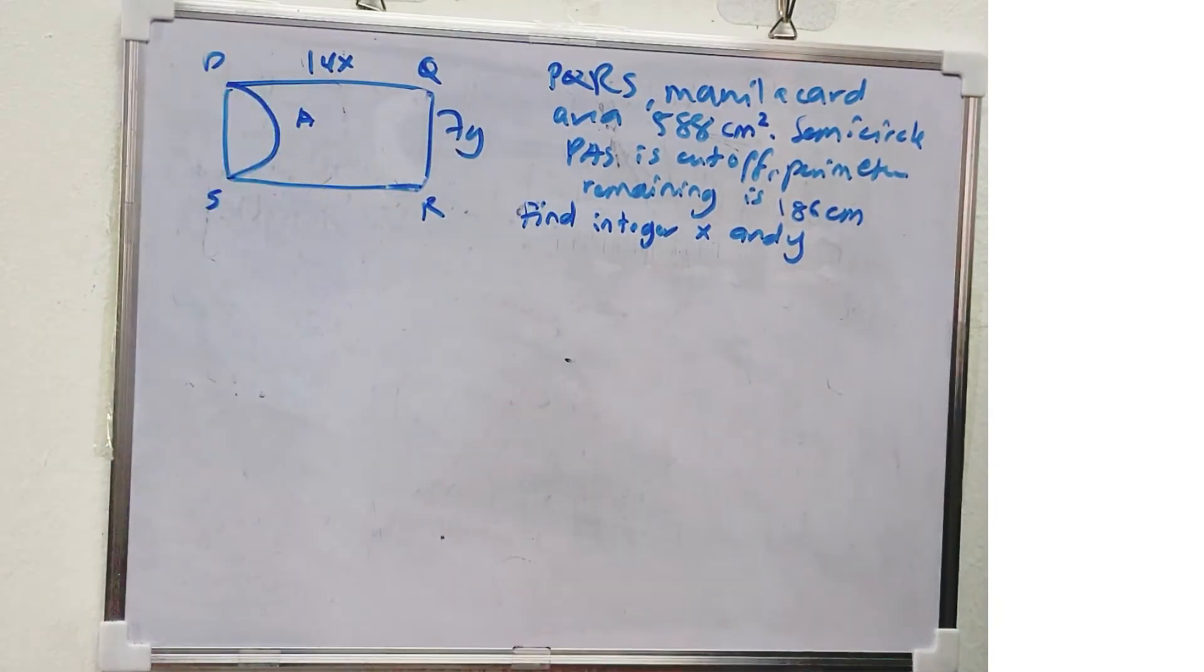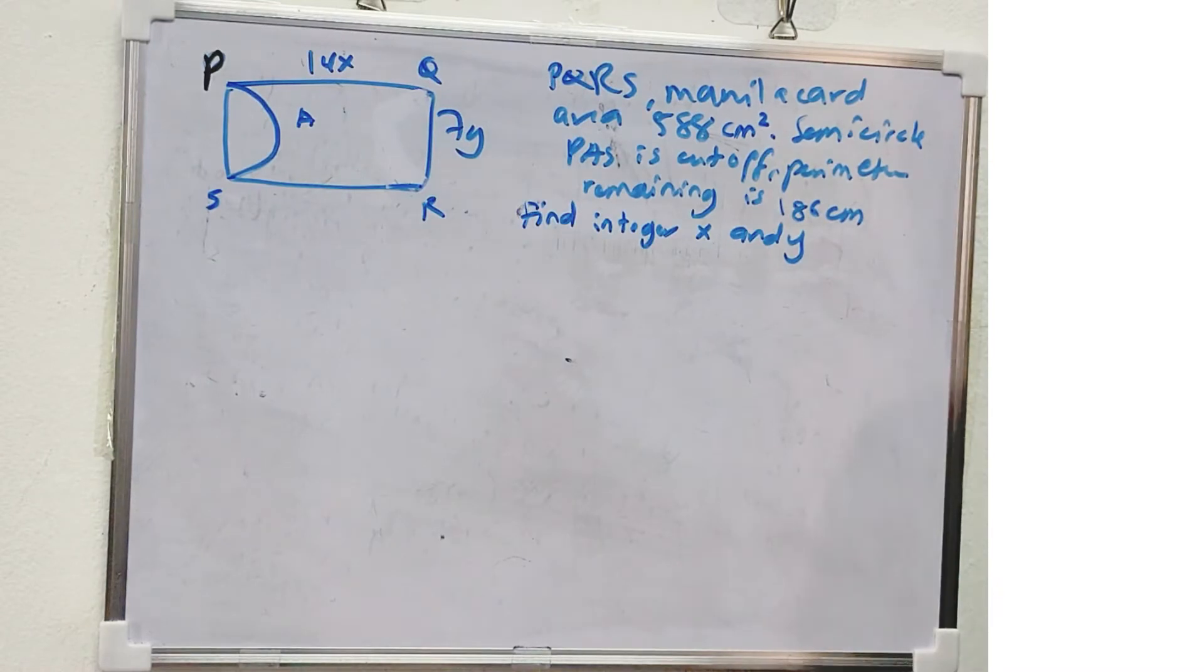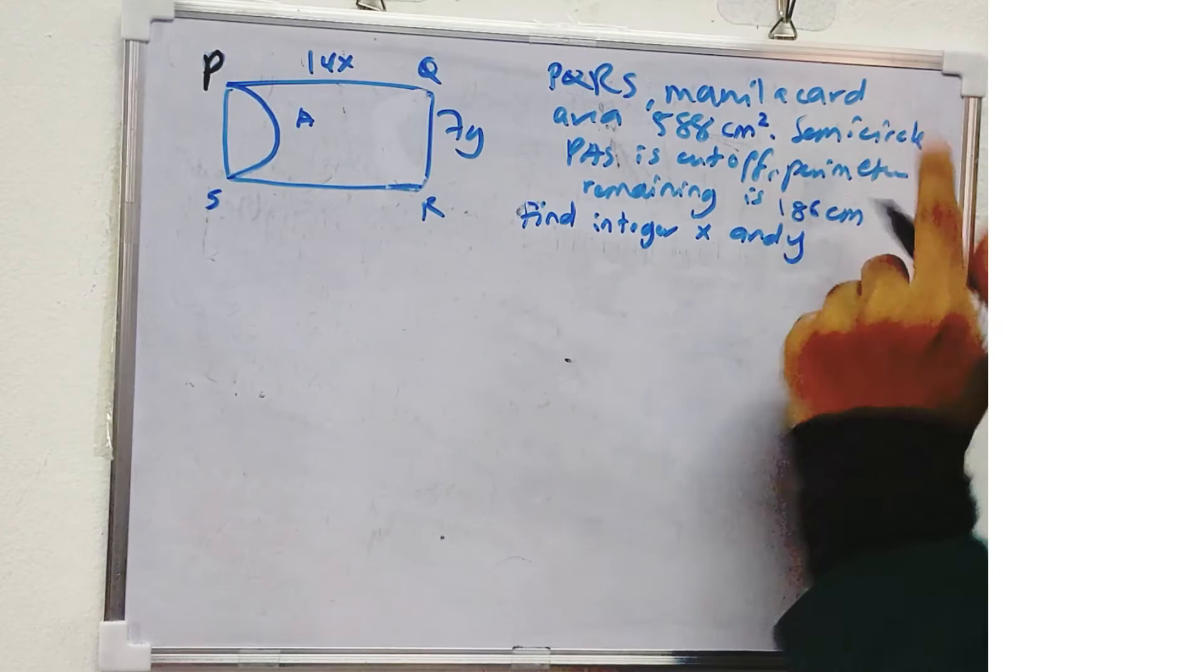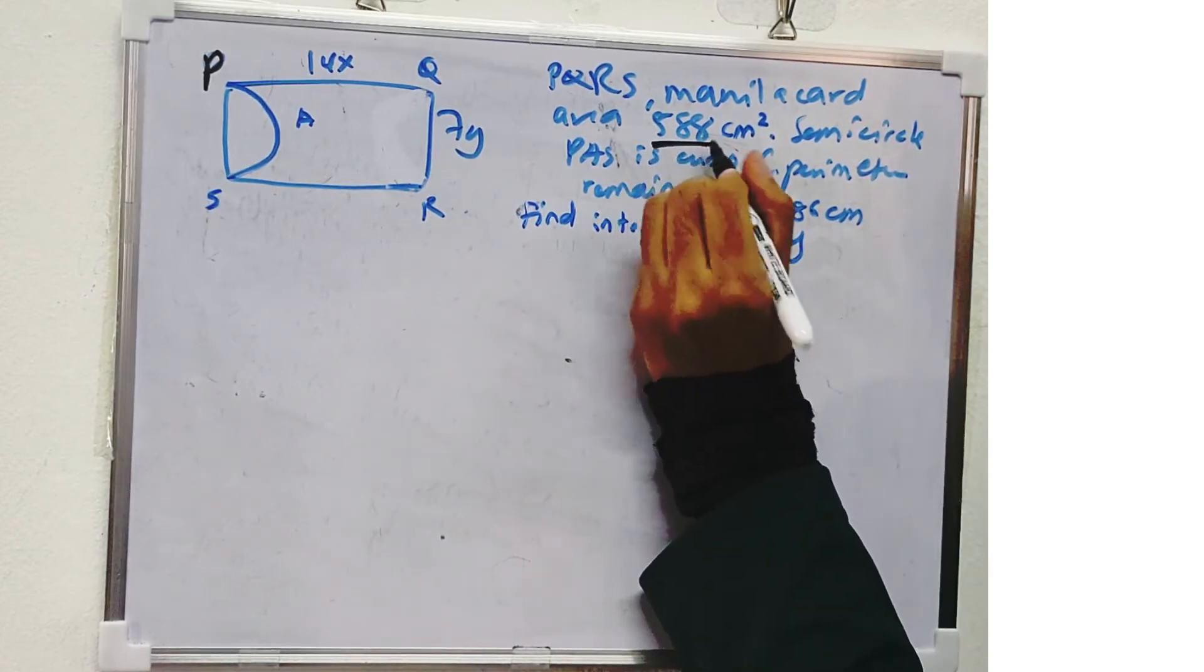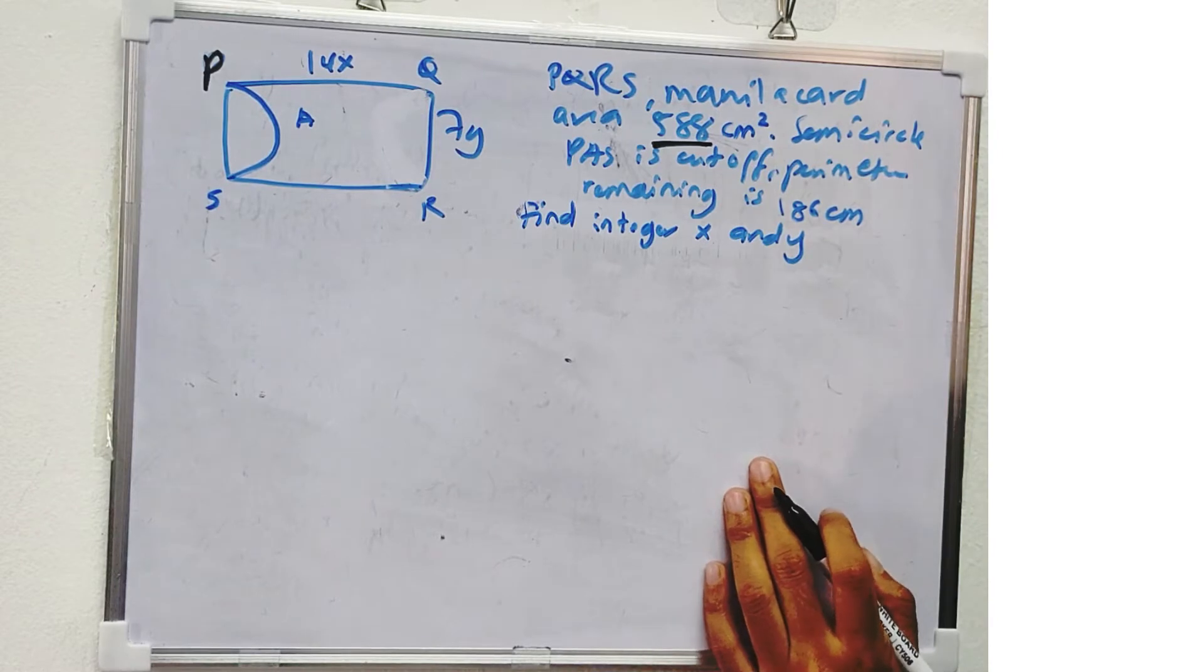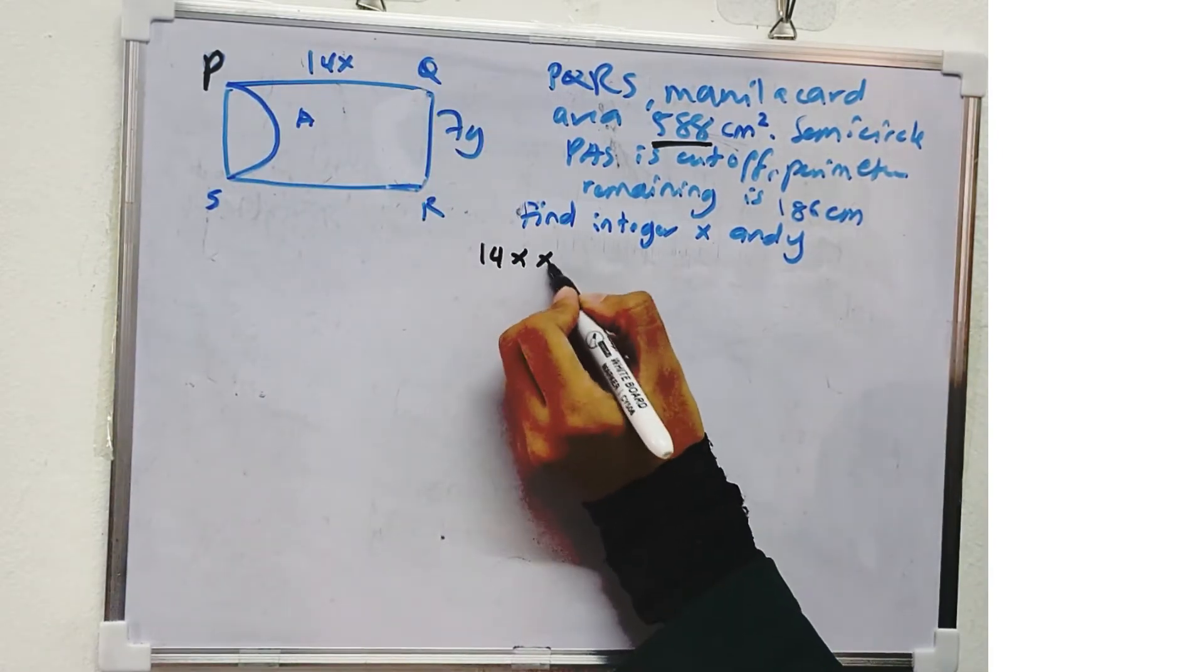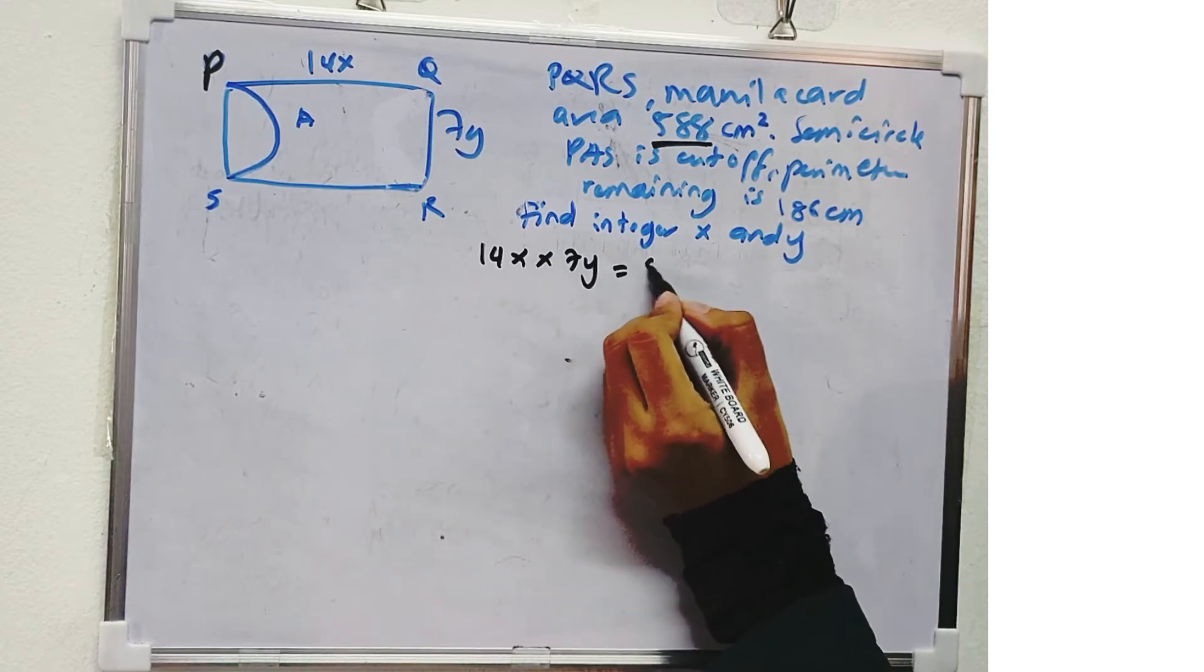PQRS, this is PAS, 7Y, 14X. So we see from the question, PQRS is a rectangle, area is 588. So we see area, what is the formula of area of a rectangle? So 14X times 7Y is equal to 588.